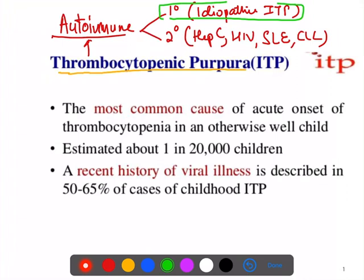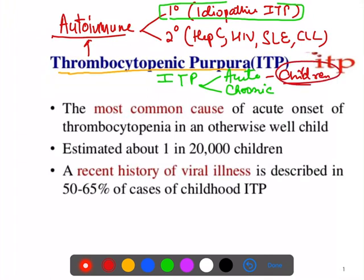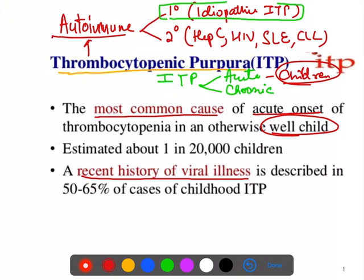Idiopathic ITP is further of two types: acute and chronic. Acute ITP is seen in children and is the most common cause of acute onset thrombocytopenia in an otherwise normal child. There is always a history of viral illness one month before the onset — features like fever and sore throat — and the estimated incidence is 1 in 20,000 children.